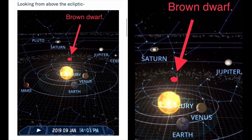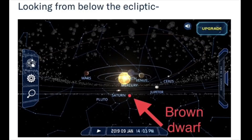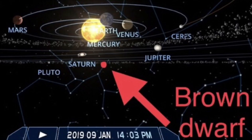This is looking from above the ecliptic. Now this is looking from below the ecliptic. So you get a better understanding of the graphs, magnetosphere, etc.